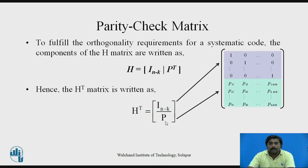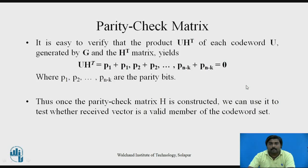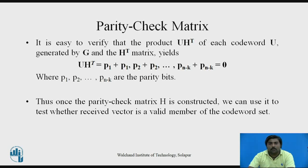So this is the parity check matrix H. The transpose of H is written by making rows become columns and columns become rows, so the identity matrix appears on top and the parity array below it. It is easy to verify that the product U·HT equals P1+P1, P2+P2, up to N−K terms, which equals zero. P1, P2, up to P(N−K) are nothing but your parity bits.